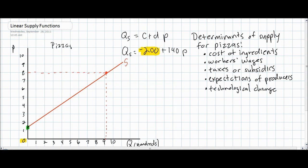If any of these non-price determinants of supply change, then we would expect the supply of pizzas to change, not just the quantity supplied. Therefore, a change in any of these variables will cause a change in the c variable, otherwise known as the autonomous level of supply.